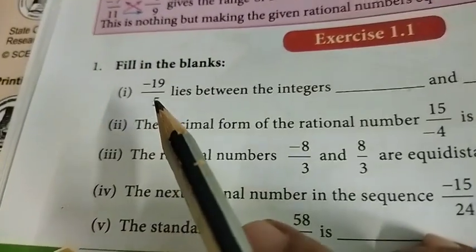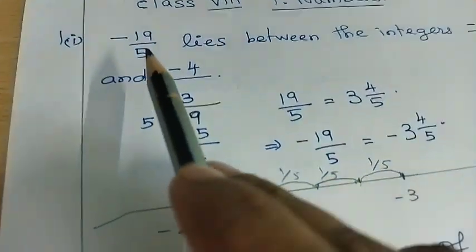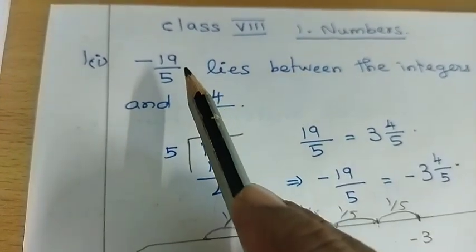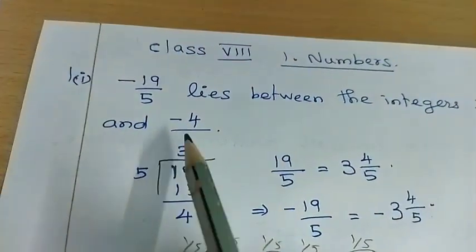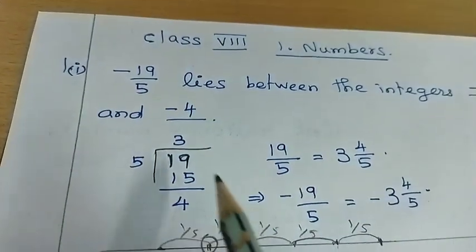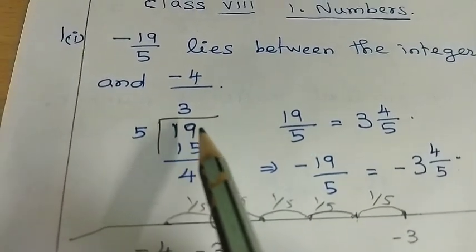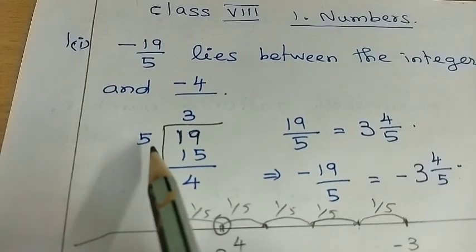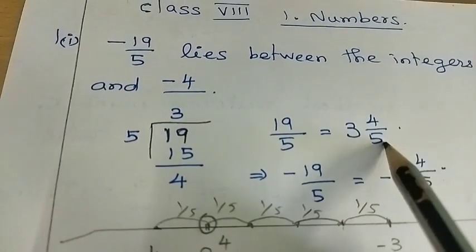The first one — fill in the blanks. Minus 19 by 5 lies between the integers dash and dash. 19 by 5 is an improper fraction. We need to convert it to a mixed fraction. 19 divided by 5: 5 threes are 15, balance 4. So it is 3 and 4 by 5.